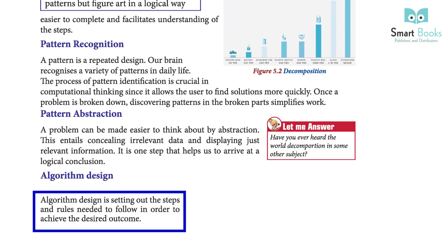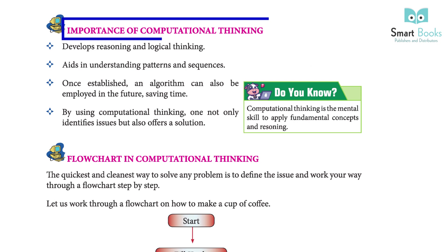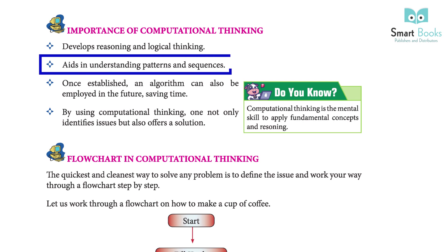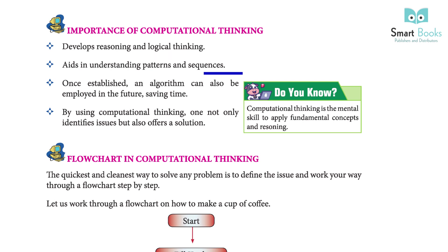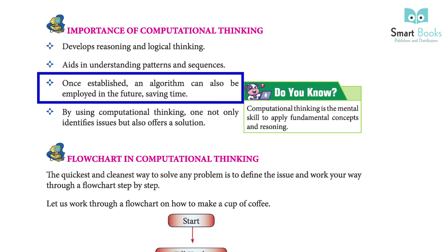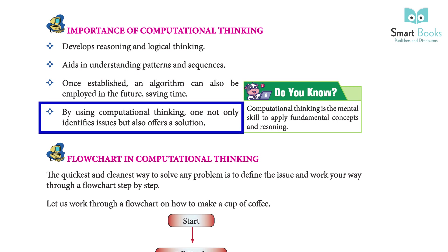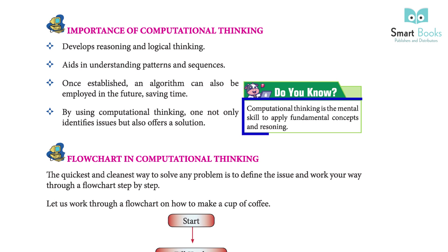Algorithm design is setting out the steps and rules needed to follow in order to achieve the desired outcome. Importance of computational thinking: it develops reasoning and logical thinking, aids in understanding patterns and sequences. Once established, an algorithm can also be employed in the future, saving time. By using computational thinking, one not only identifies issues but also offers a solution. Computational thinking is the mental skill to apply fundamental concepts and reasoning.